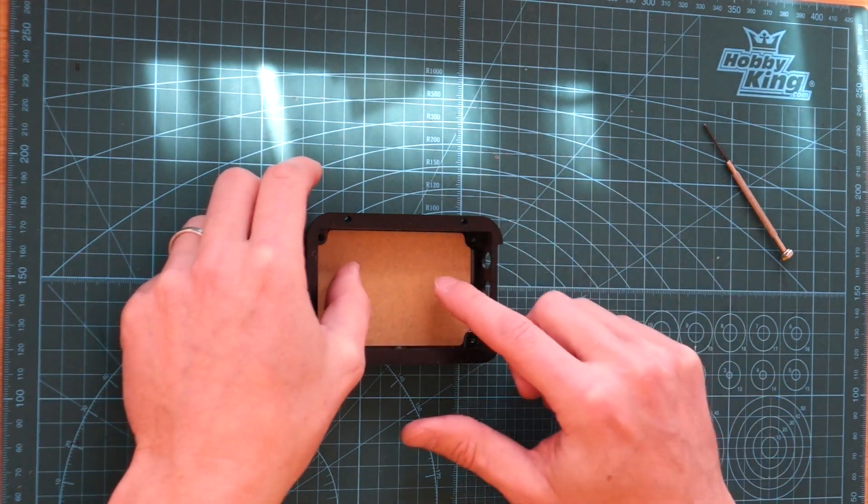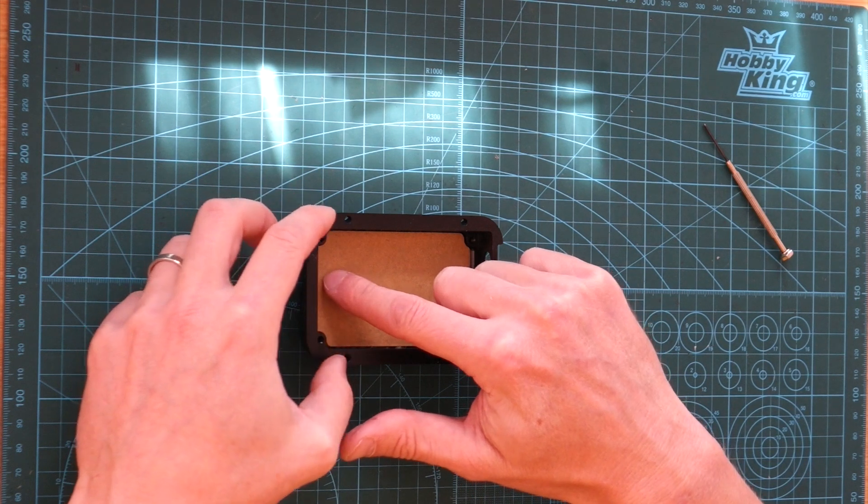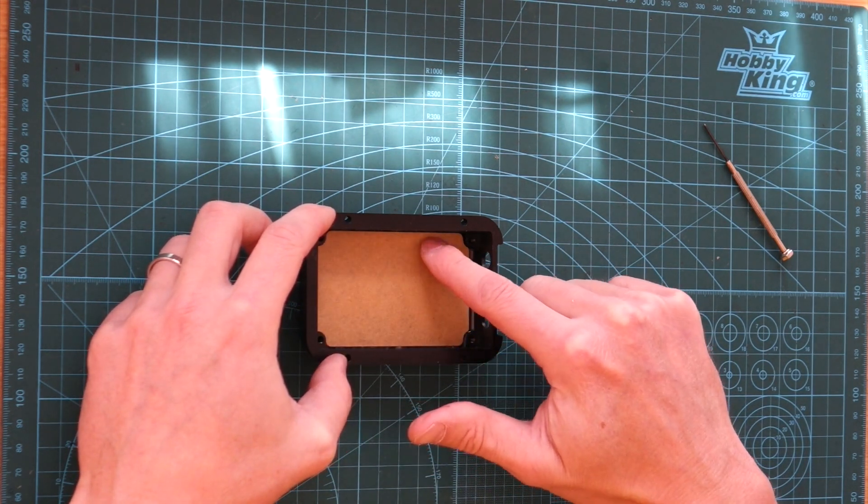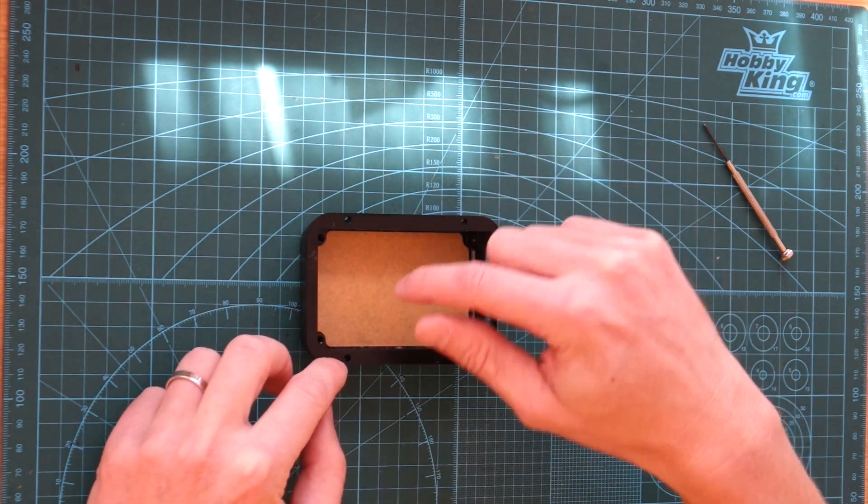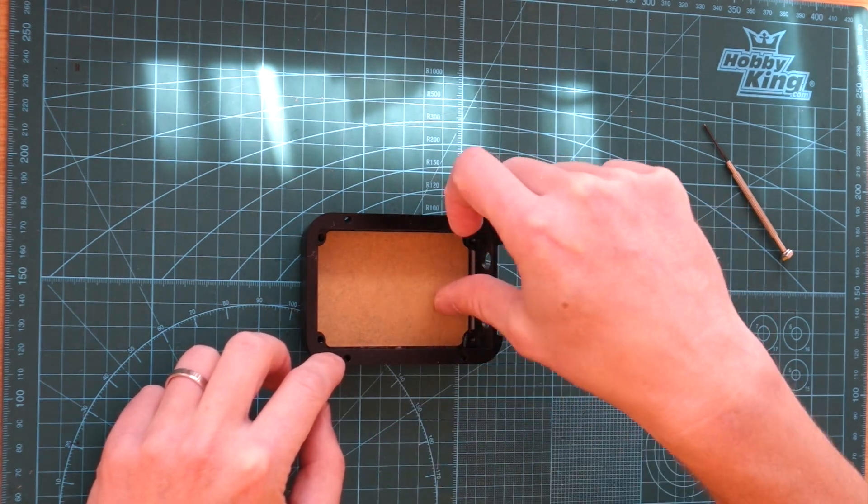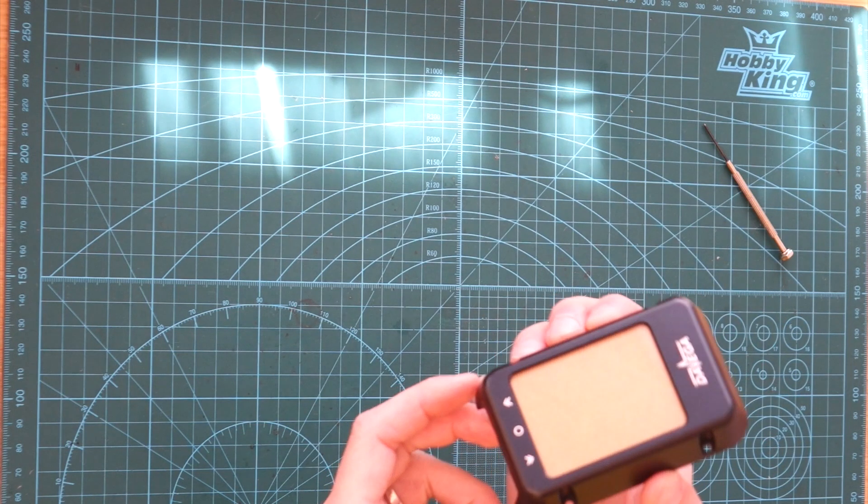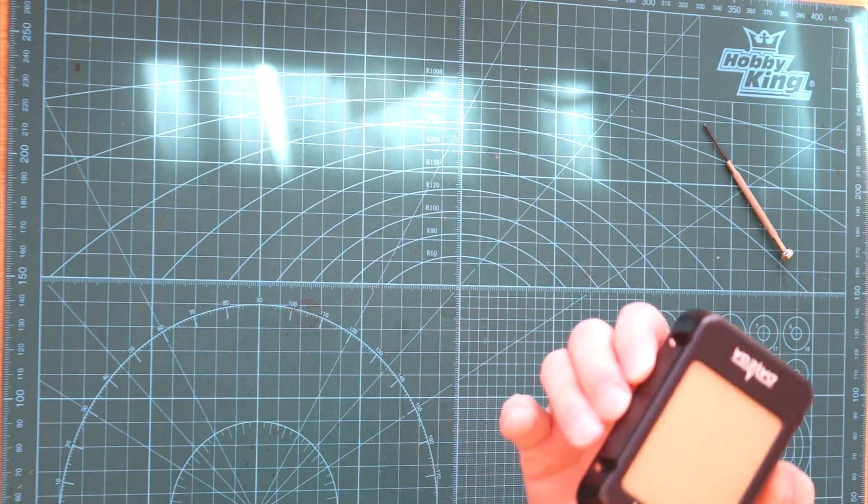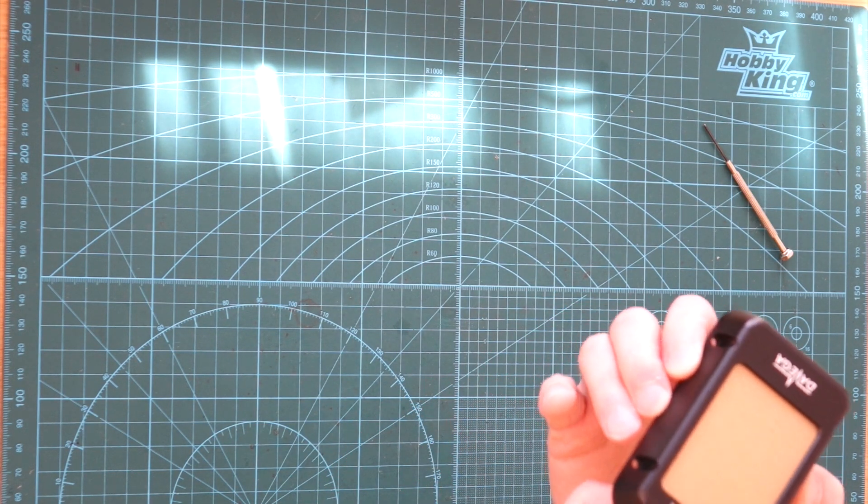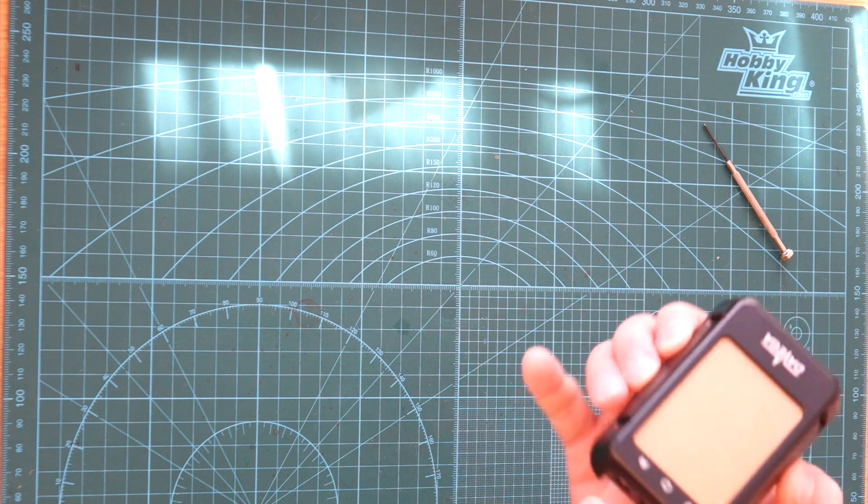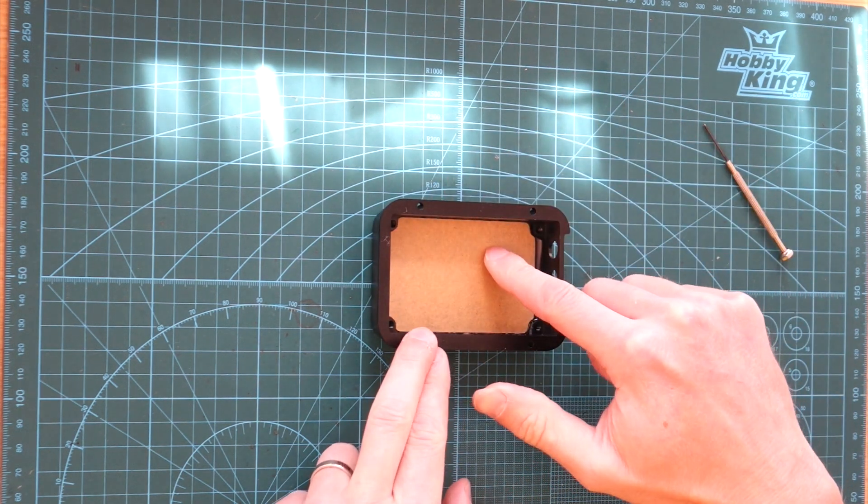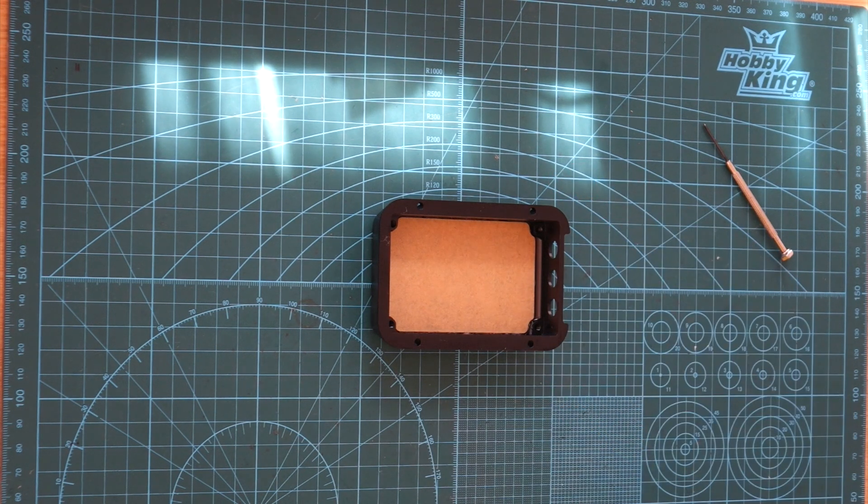So put it in. And just gently push. Okay. We can check if any silicone is coming out. It looks good. So now we just let it cure. And in the meantime I'll show you the other parts of the assembly.